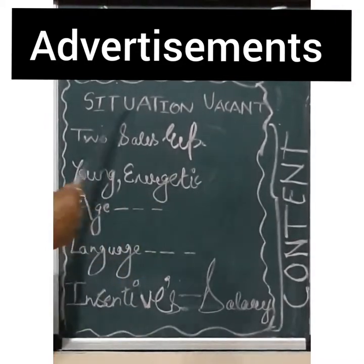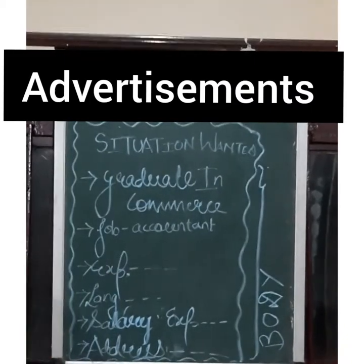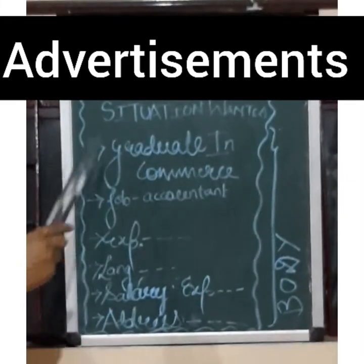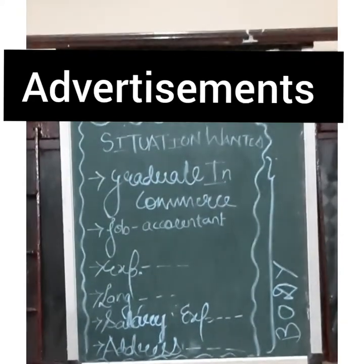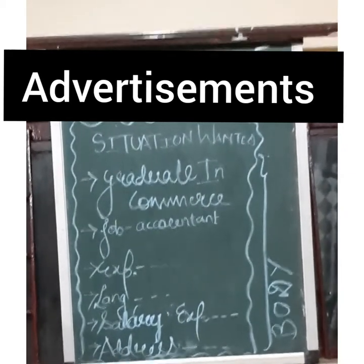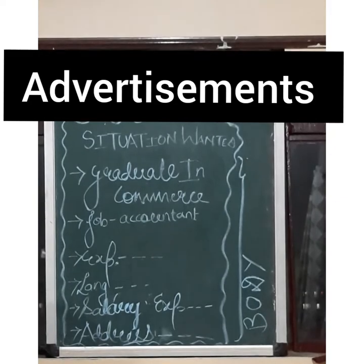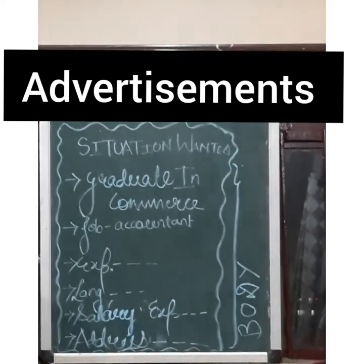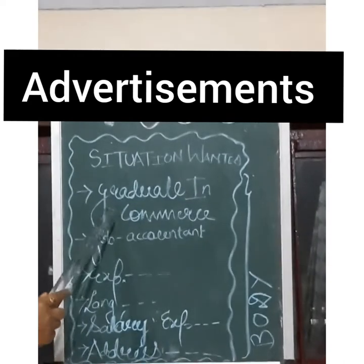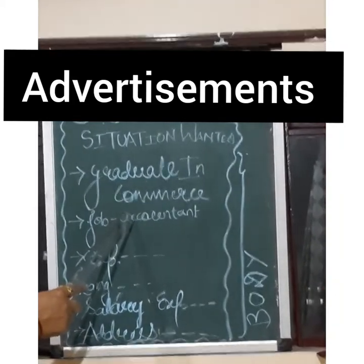The second part is situation wanted. I would like to make one thing absolutely clear: what is the difference between situation wanted and situation vacant? Situation wanted is when you yourself are in need of a job, and situation vacant is when you are providing a job opportunity for some other person. Example of situation wanted: you are a graduate in commerce and you need a job. Draft an advertisement for the same to be published in a local daily. A first class graduate in commerce seeks a suitable job in a firm or a banking institution to work as an accountant.